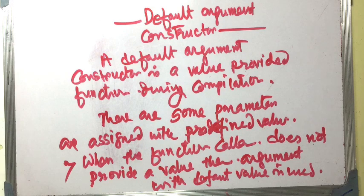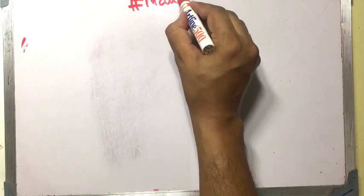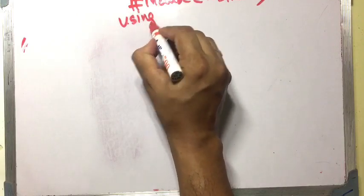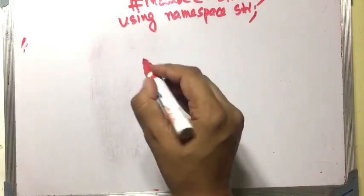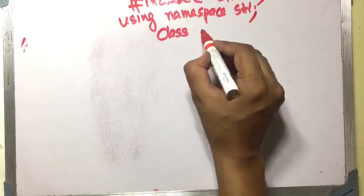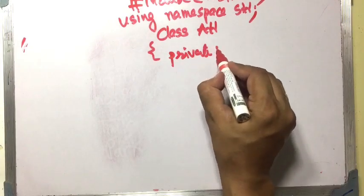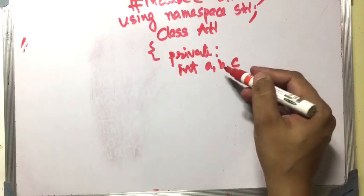Let us consider an example of a default argument constructor. We include iostream and use namespace std. The class name is 'add'. The private members consist of int a, b, c.